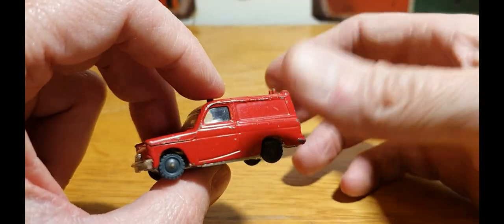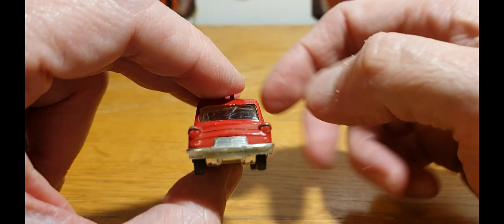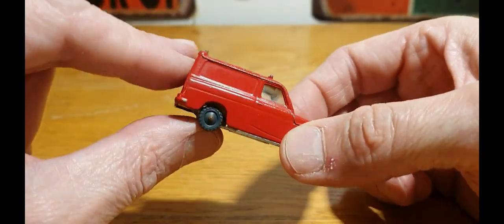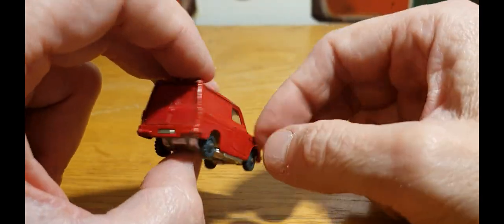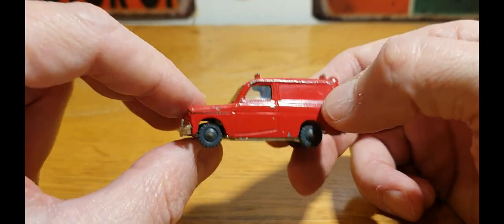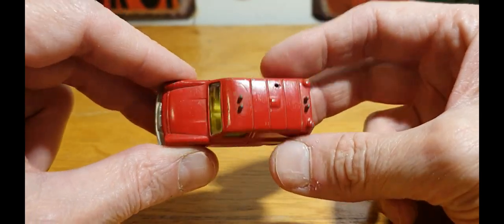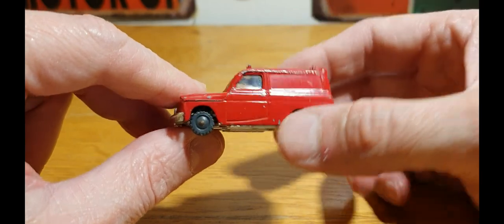Mettoy made Corgi and also made Husky brand. I think Husky was meant to be like a cheap alternative to the original Matchbox because a lot of the Husky toys are quite small.